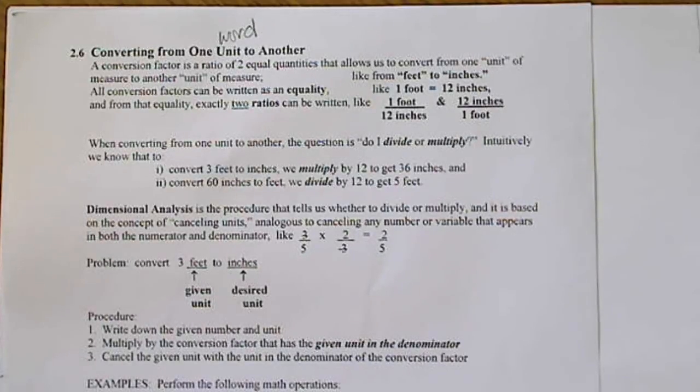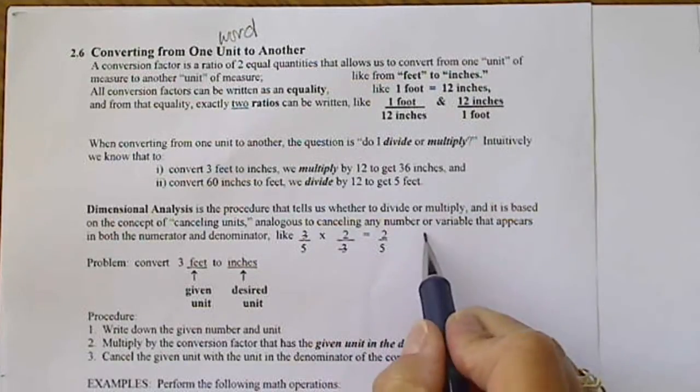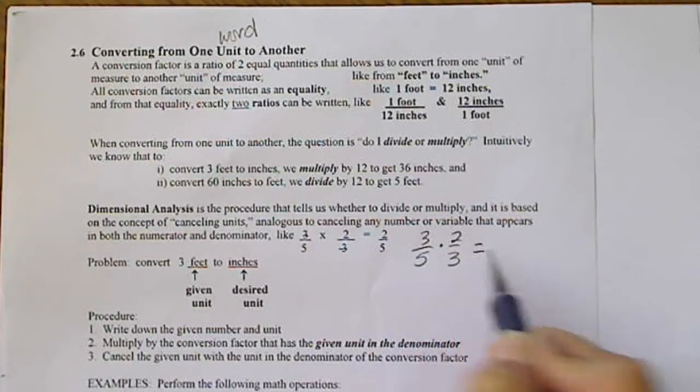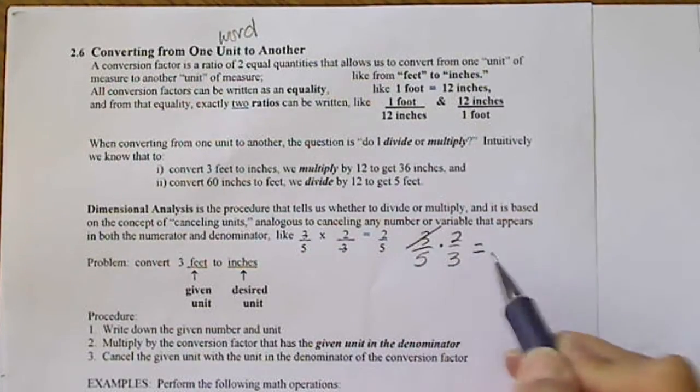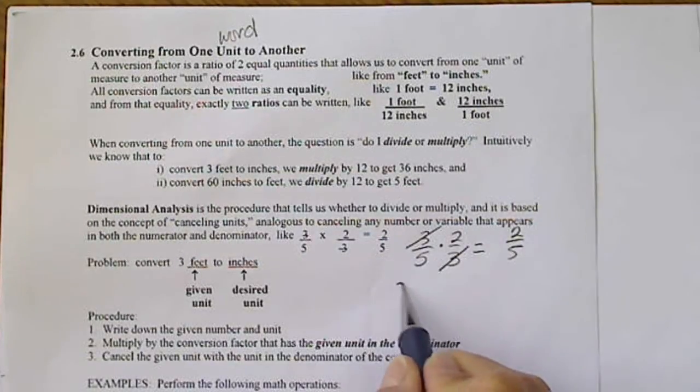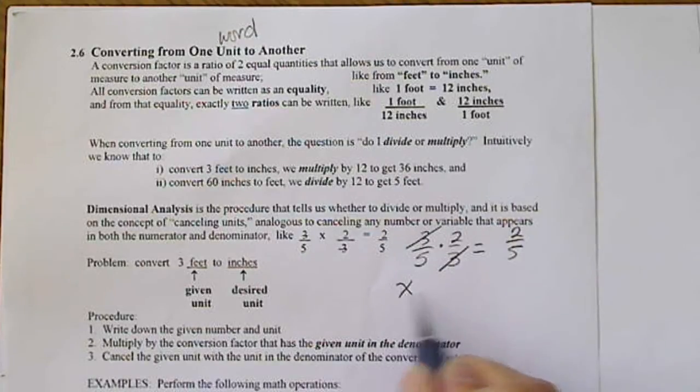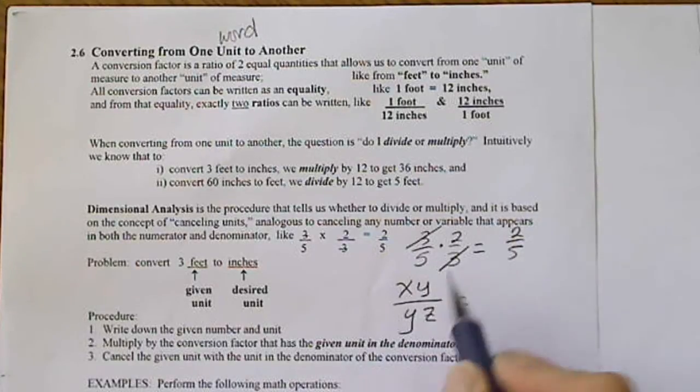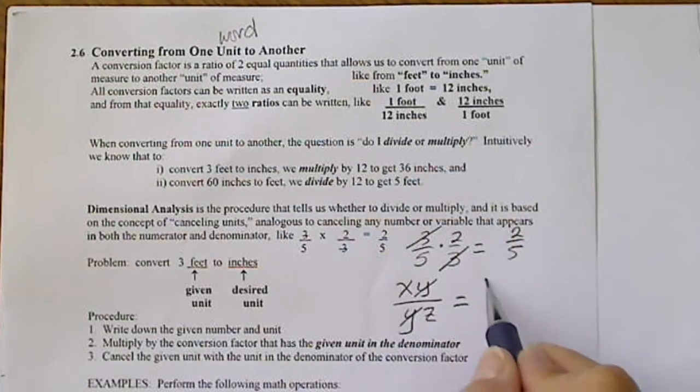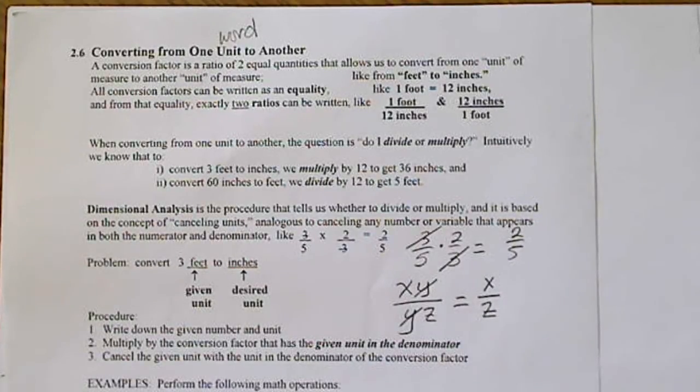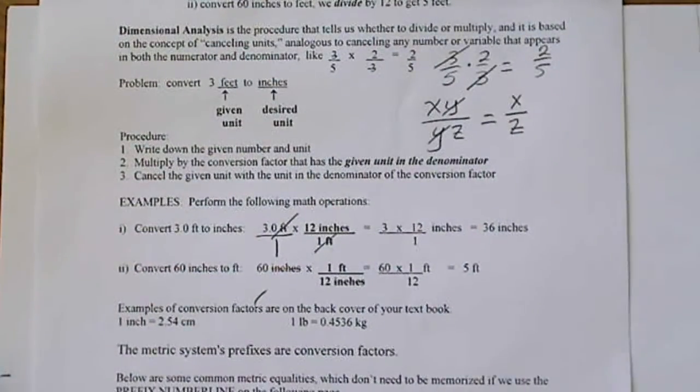We are going to be converting from one unit to the other by canceling units. Just like if we had a fraction, for example 3/5 times 2/3, we could cancel a 3 in the numerator with a 3 in the denominator and get 2/5. We've also done this with variables, maybe xy divided by yz. We could cancel both of the y's and get x over z. So what we're going to be doing is actually canceling units.